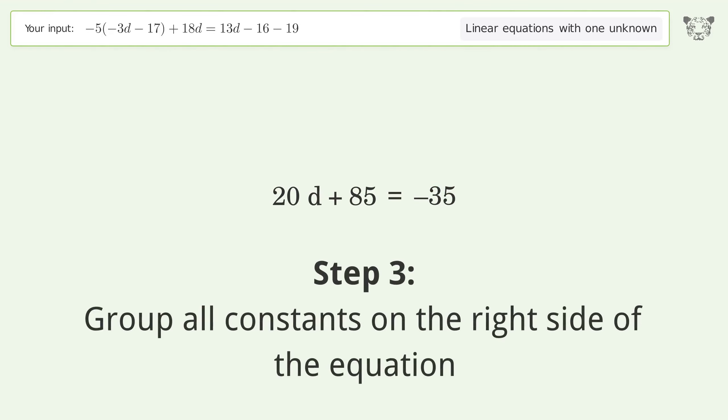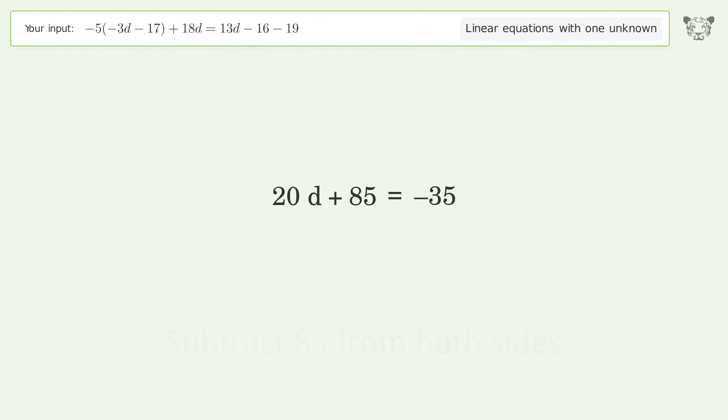Group all constants on the right side of the equation. Subtract 85 from both sides. Group like terms, simplify the arithmetic, and group like terms again.